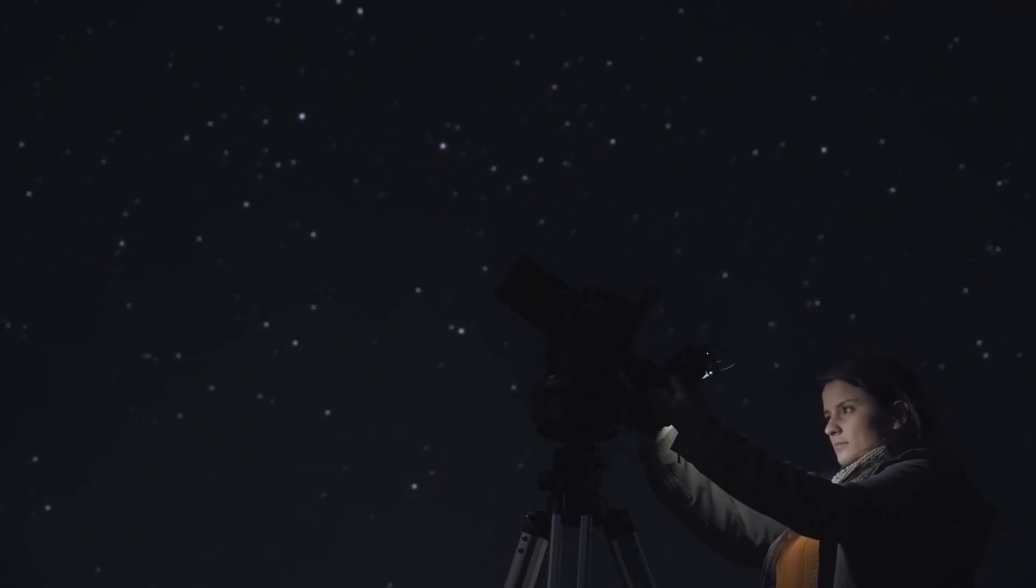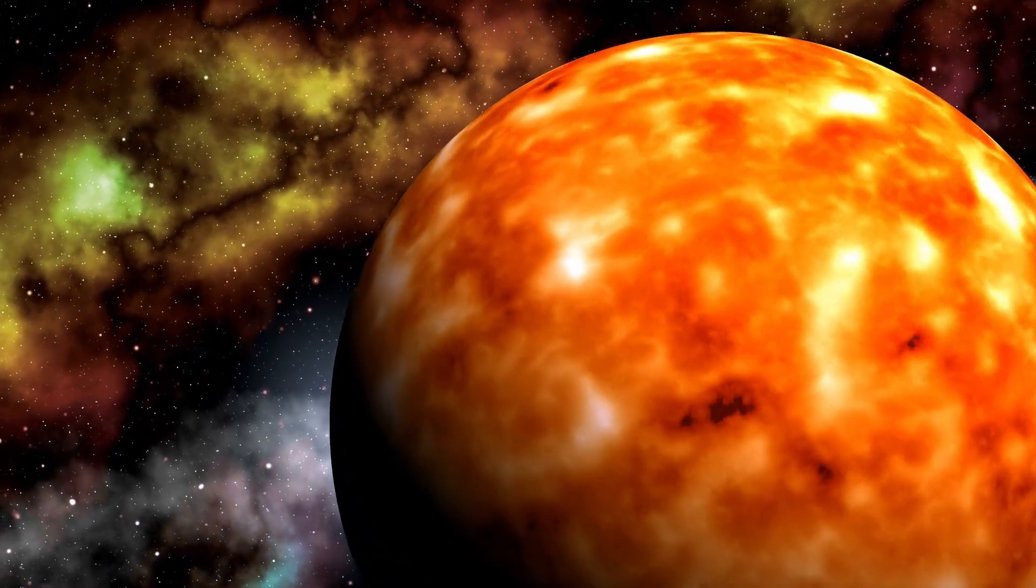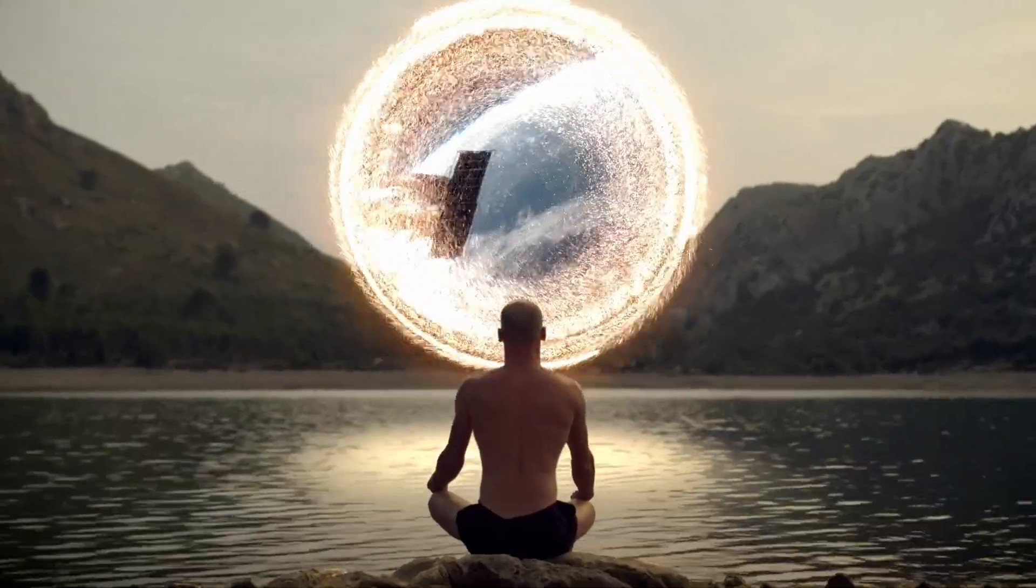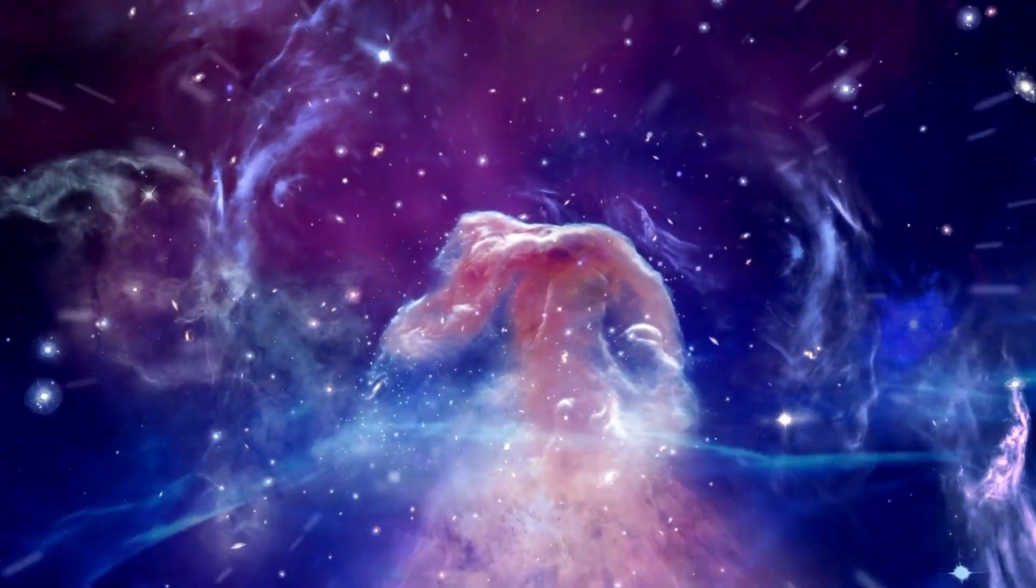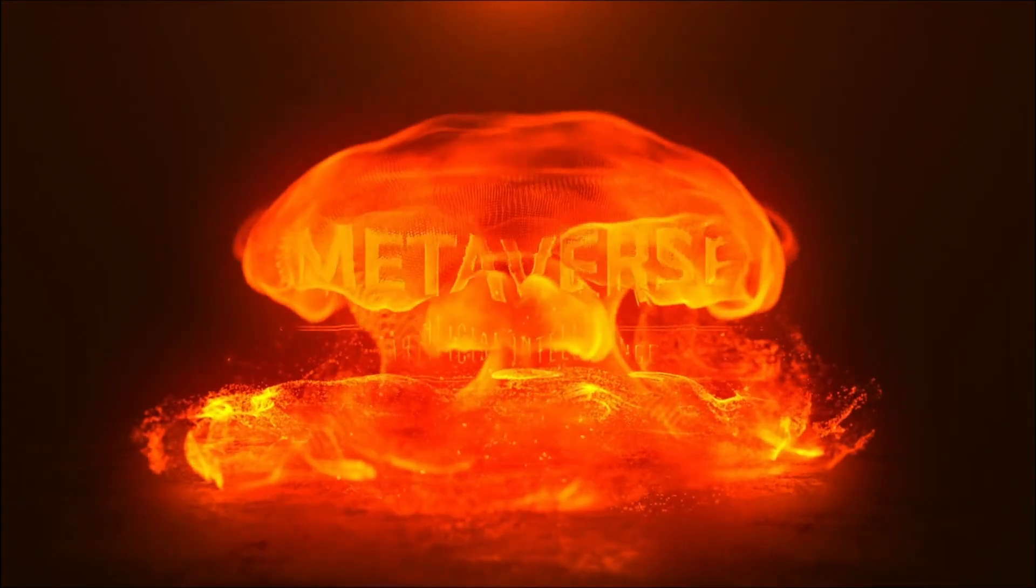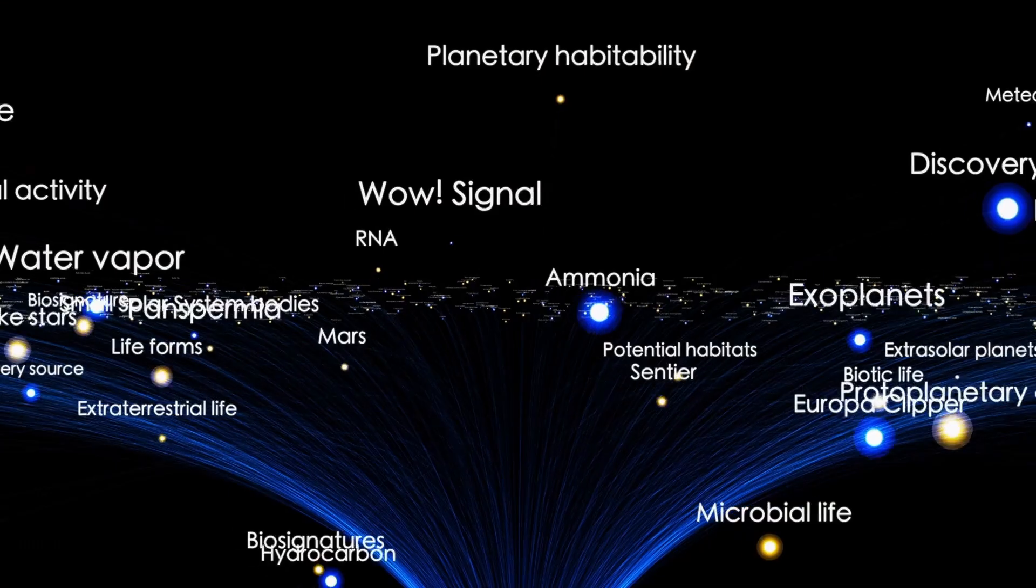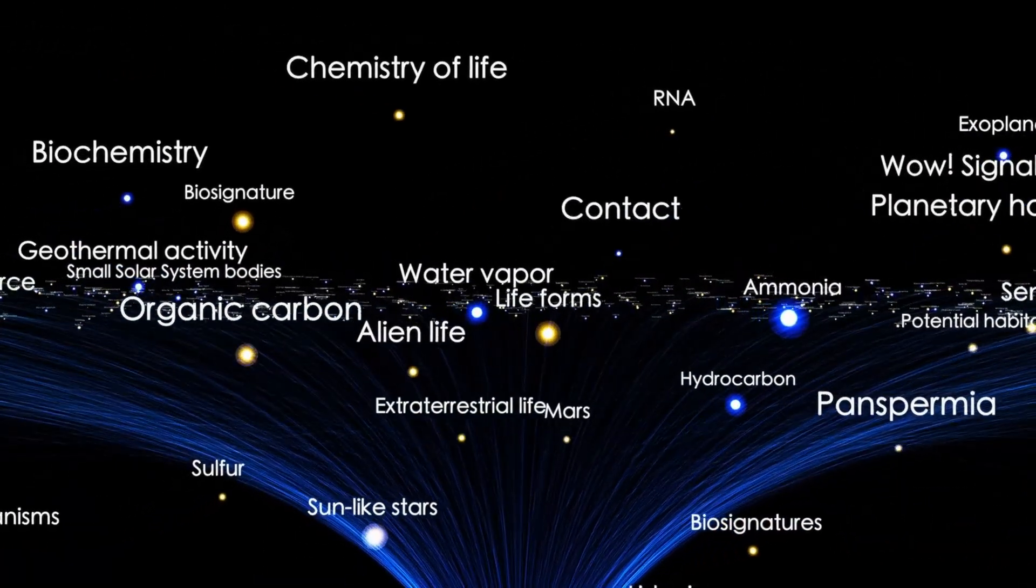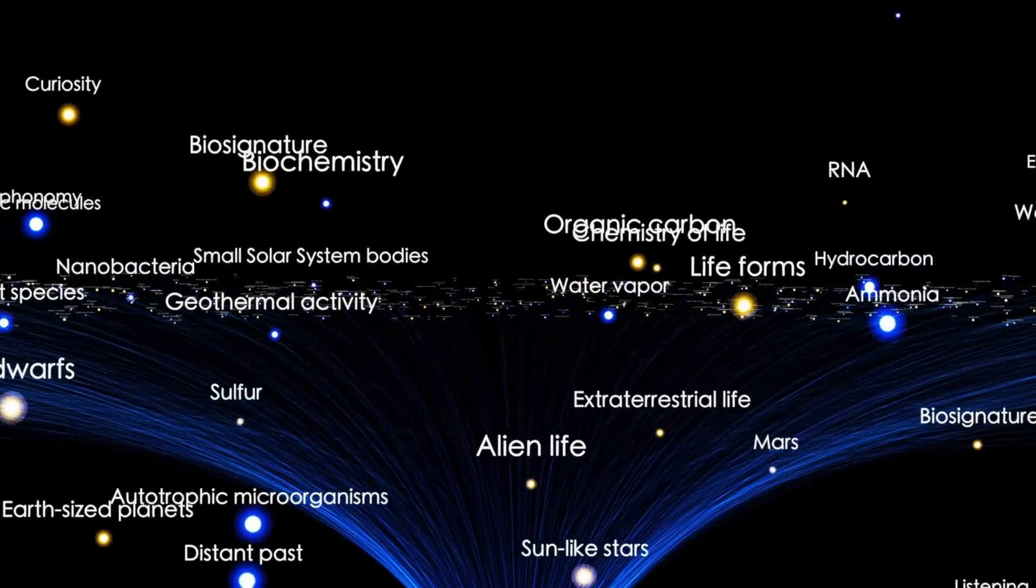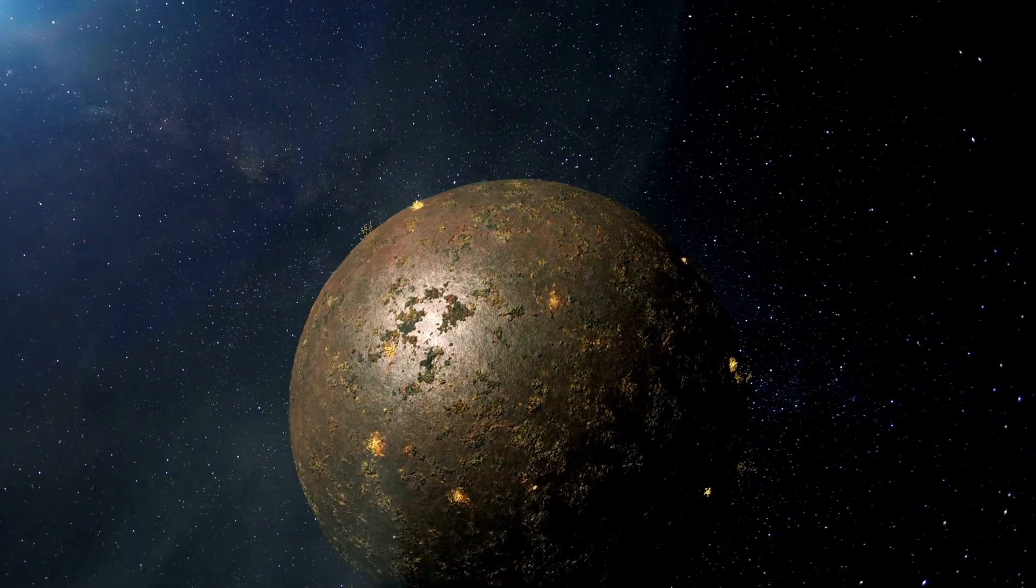When astronomers turned their most powerful instruments toward its coma, the glowing halo of gas and dust surrounding its nucleus, they expected to find the usual suspects: water vapor, carbon compounds, silicates, and trace metals. Instead, they found something that made no sense. 3I Atlas was releasing pure nickel into space—not just traces, but 10 pounds every second. And where there was nickel, there was no iron. That was the first red flag. Because in space, nickel and iron are forged together in the same stellar crucibles. They're cosmic twins. To find one without the other is like discovering salt without sodium. It doesn't happen unless someone or something made it happen.